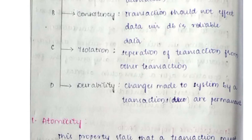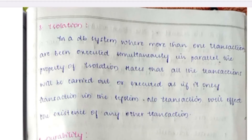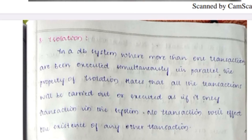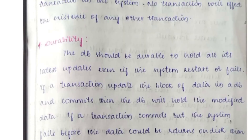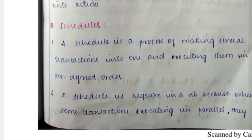Consistency means whatever data is required, data consistency must be maintained — that is called consistency. Isolation means in a database system where more than one transaction is executed simultaneously, isolation is applied. Durability means the system must be durable enough to hold all its latest updates.